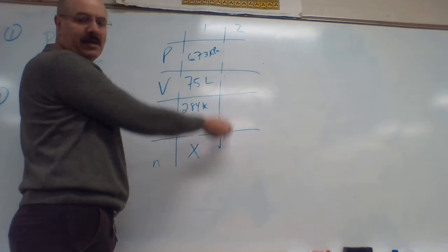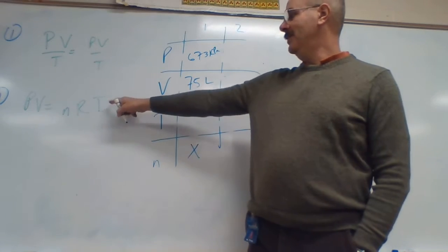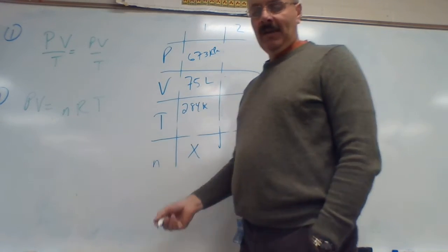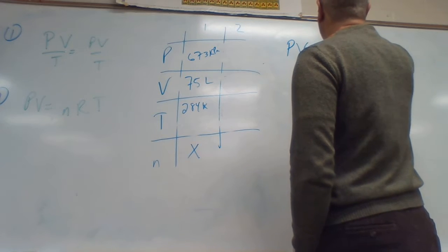Notice I don't have anything in column number two. Because I don't have anything in column number two, we're looking at equation number two here. Okay, so we're using PV equals NRT.